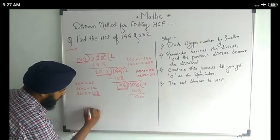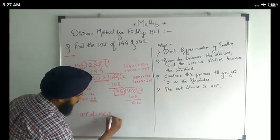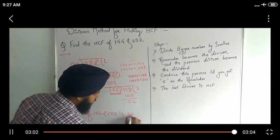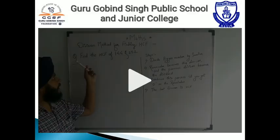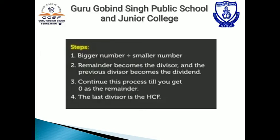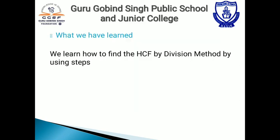Now we have seen two examples of how to find the HCF by division method. The steps are: first, divide the bigger number by the smaller number. Second, the remainder of the first division becomes the divisor and the previous divisor becomes the dividend. Continue the division until you get remainder 0. When you get remainder 0, the last divisor is the HCF of the given numbers. So here we have learned how to find the HCF by division method using these steps.